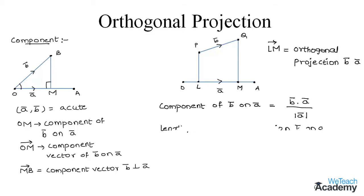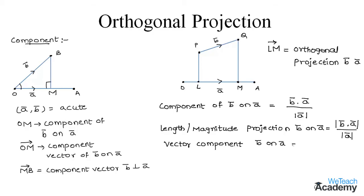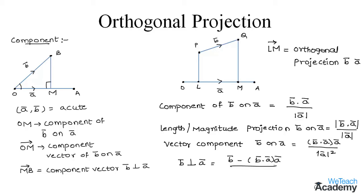The length or magnitude of the orthogonal projection of B bar on A bar is given as mod(B bar · A bar) divided by mod A bar. The vector component of B bar on A bar is given by (B bar · A bar) times A bar divided by mod A bar squared. The vector component of B bar perpendicular to A bar is given by B bar minus (B bar · A bar) times A bar divided by mod A bar squared.